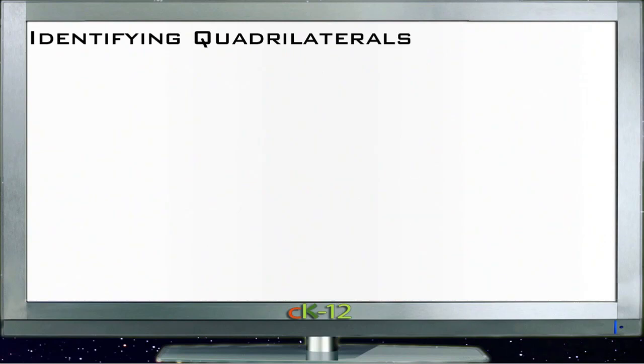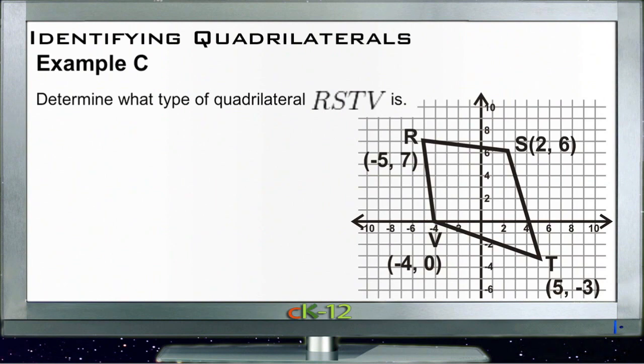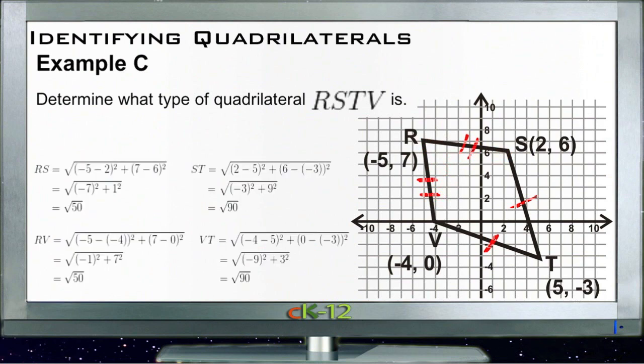Finally, example C. Example C says determine what type of quadrilateral RSTV is. Now, usually I try and do the math on the screen, but we just don't have enough time for that. So what I've done is go ahead and I'll bring the math up here in just a second. But let me tell you again what we're doing. To see what kind of quadrilateral it is, it looks like this is probably a kite. And if it is a kite, then we know that this side is congruent with this side, and this side is congruent with this side. So all we have to do is use our distance formula to see if those lines are actually the same. And that's what I'll call up here.